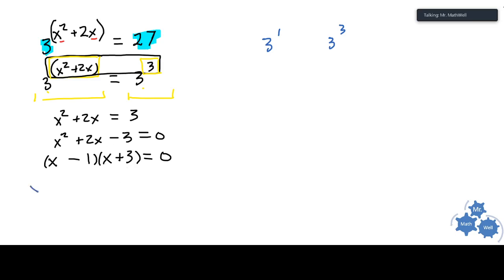Now we use the zero product principle, which states that if the product of these two things should equal zero, that means one or both of them will have to equal zero at some point. So we can find the x that makes this zero, and that's x equals one. And we can find the x that makes this factor zero, and that's x equals negative three. So those are your two possible answers.